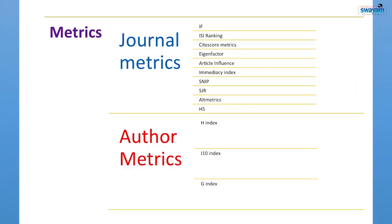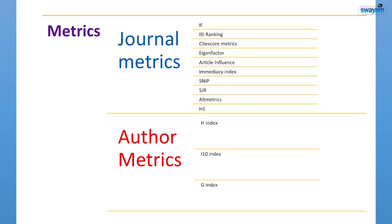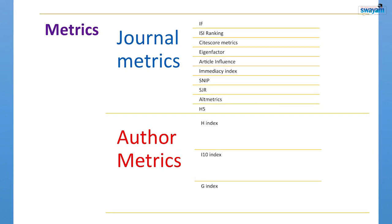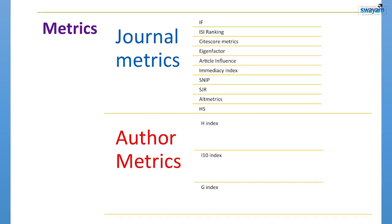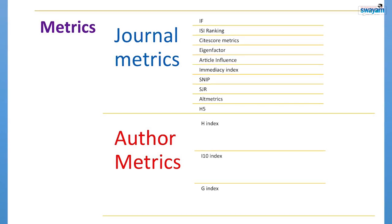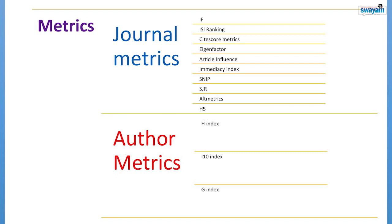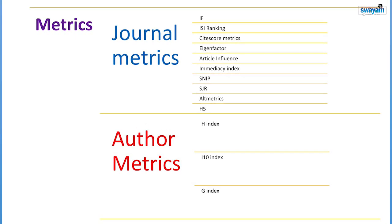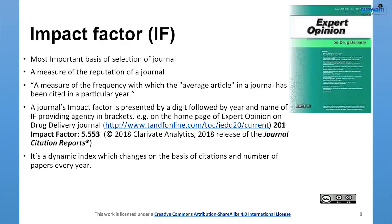Bibliometrics metrics may be of two types: journal metrics and author metrics. Journal metrics include impact factor, ISI ranking, CiteScore metrics, Eigenfactor, article influence, immediacy index, SNIP, SJR, and H5 index. Author metrics include h-index, i10-index, and g-index.